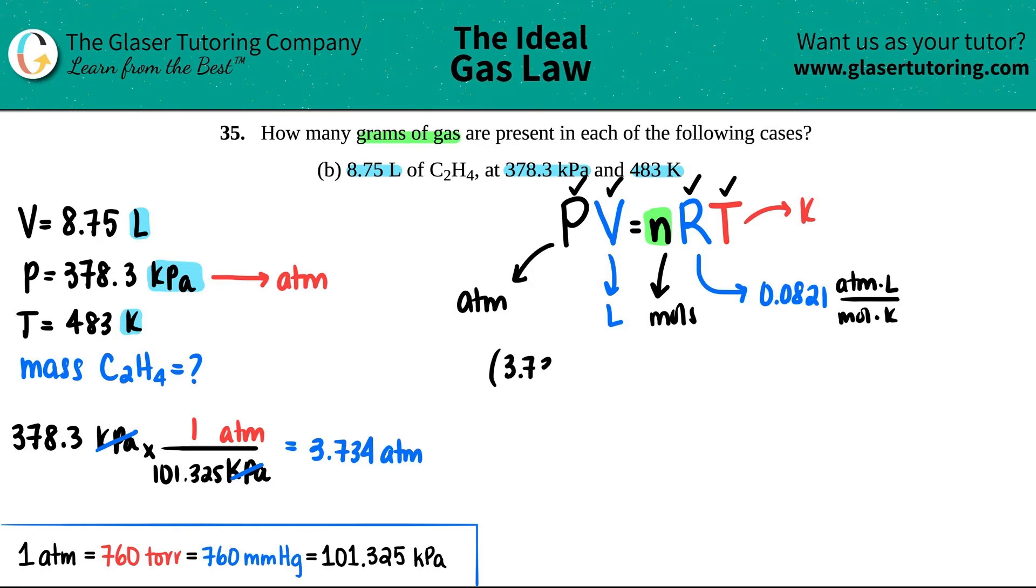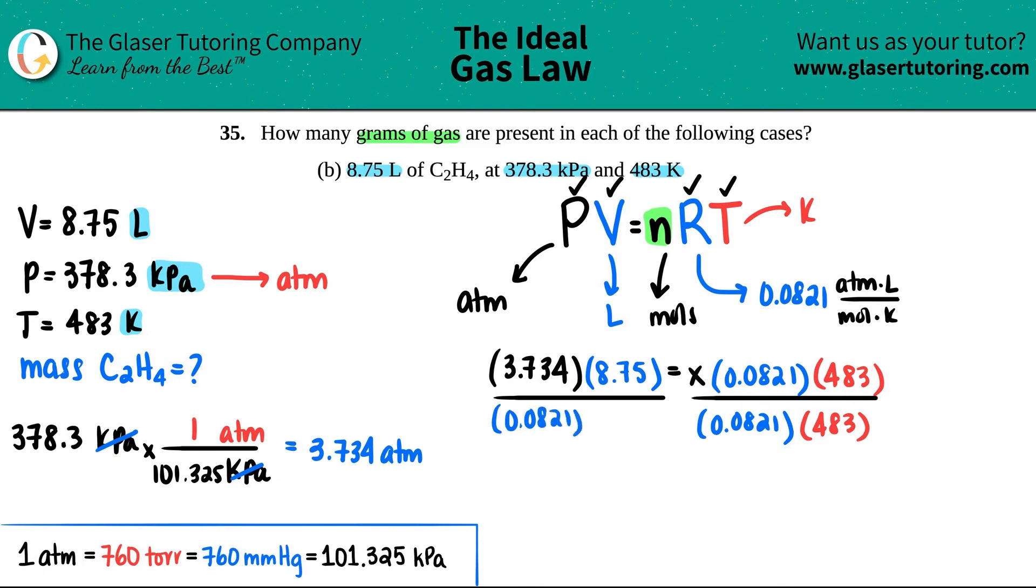I'm just going to say for my atm it's 3.734 times the volume which is 8.75, and this equals the moles. I'm just going to label it as X. The R value is always the same, 0.0821, and then the temp value is 483. You can get this as one number, get this as one number, and then just solve. For simplicity I'm just going to divide by the 0.0821, that will cancel out the R value on that side, and then divide by 483. I'm going to do the same thing on this side, divide by 0.0821 and also by 483. This goes bye-bye and so does this, and now we just have X equals.